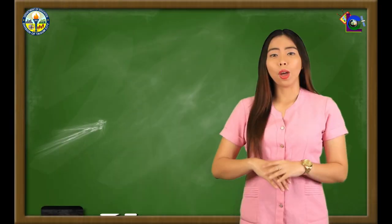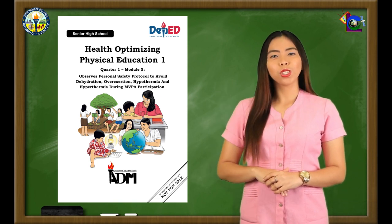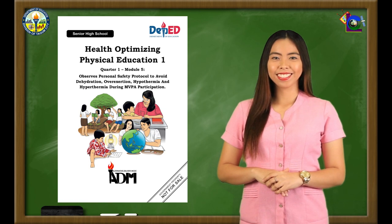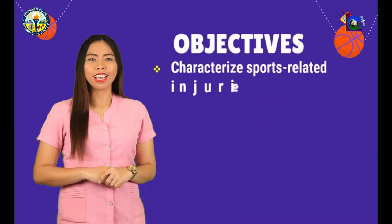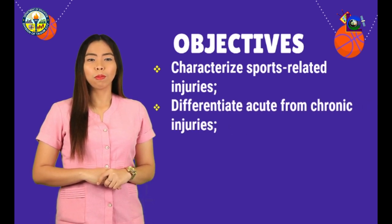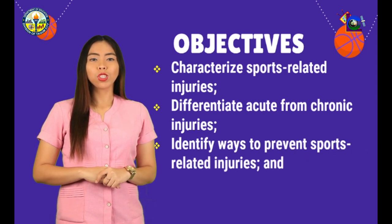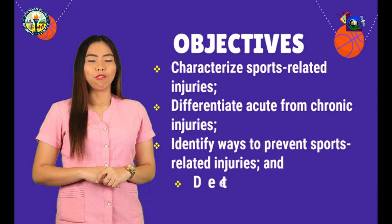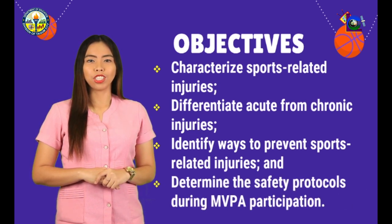Welcome to Health Optimizing Physical Education 1, Module 5 on Sports-Related Injuries. After going through this module, you are expected to: First, characterize sports-related injuries. Second, differentiate acute from chronic injuries. Third, identify ways to prevent sports-related injuries. And fourth, determine the safety protocols during MVPA participation.